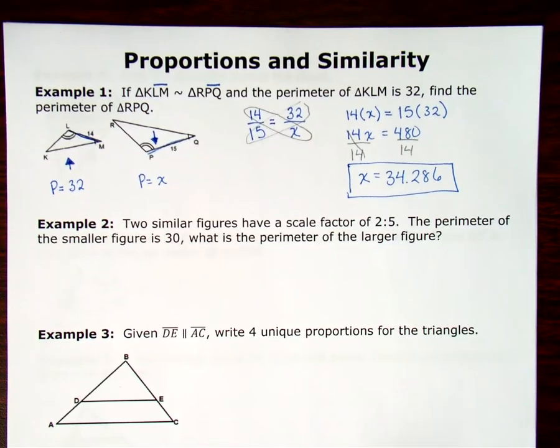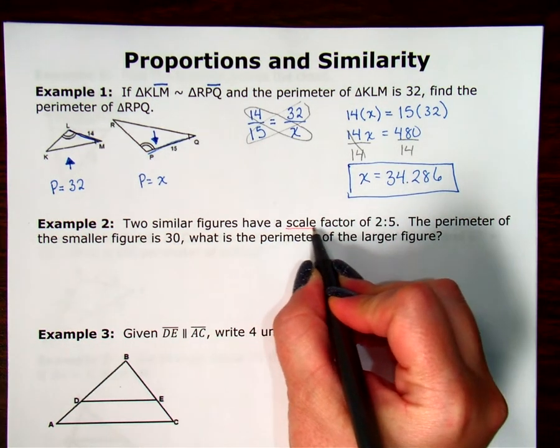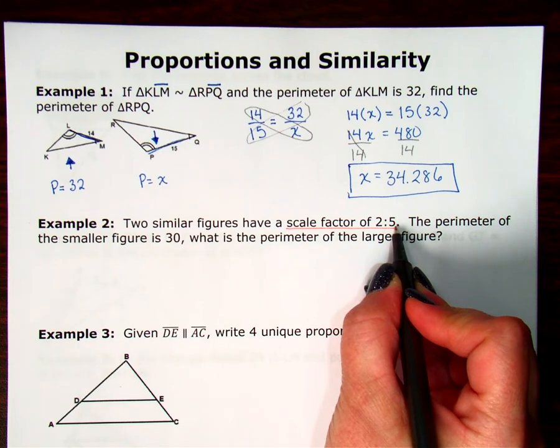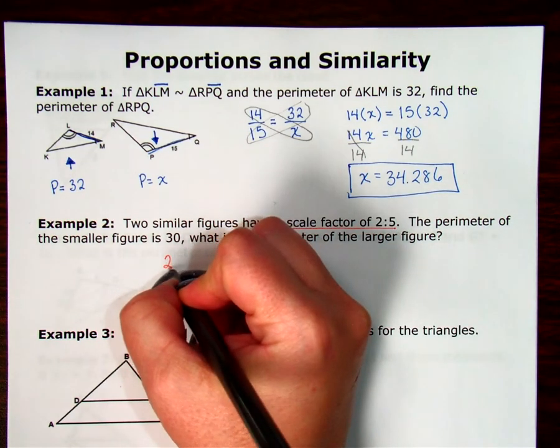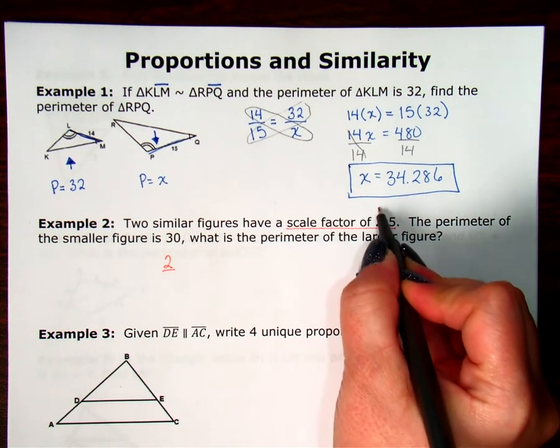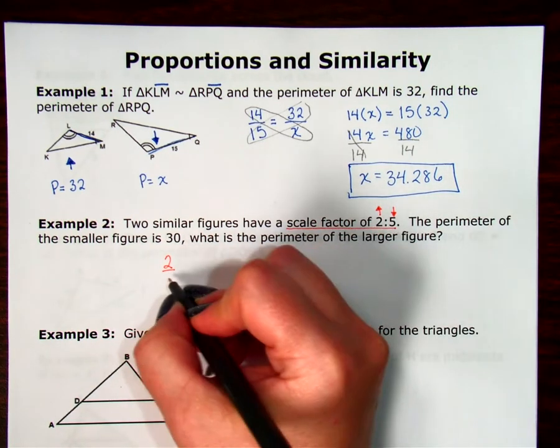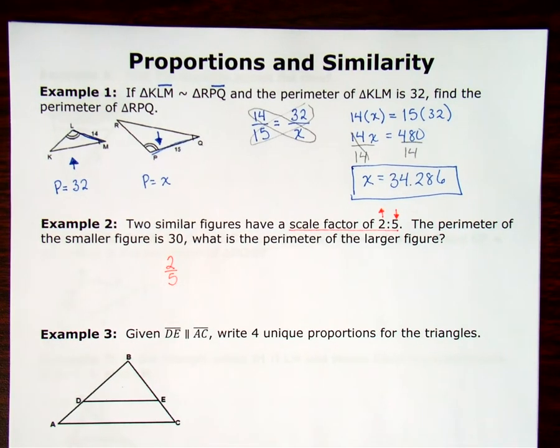Example 2. Two similar figures have a scale factor of 2 to 5. The perimeter of the smaller figure is 30. What is the perimeter of the larger figure? Well, I know the ratio of the perimeters will reduce to the same ratio as the scale factors, which says 2 colon 5. To work with it mathematically, I'm going to change that into a fraction where the first number is always the numerator and the second number is always the denominator. The perimeter of the smaller figure is 30.